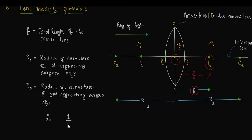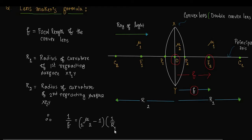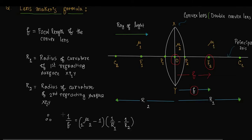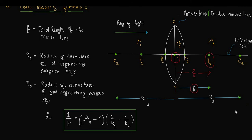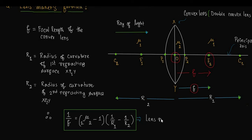Therefore, the Lensmakers Formula is: 1/f = (1mu2 − 1)(1/R1 − 1/R2). This is the Lensmakers Formula for a convex lens.